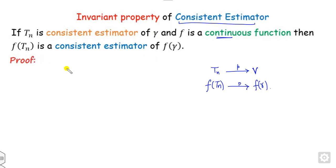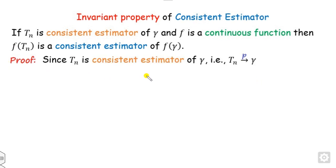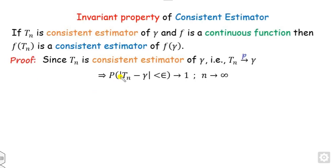The proof is very simple — we can complete it in three lines. It is given that t_n is the consistent estimator, so t_n converges to gamma in probability. The definition of the consistent estimator is: the probability that |t_n - gamma| < epsilon approaches 1 as n approaches infinity.